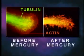Shown here is a neurite growth cone stained specifically for tubulin and actin, before and after mercury exposure. Note that the mercury has caused disintegration of tubulin microtubule structure.